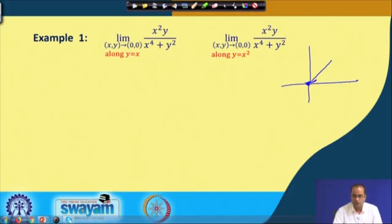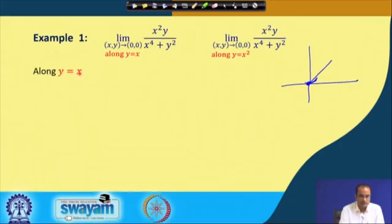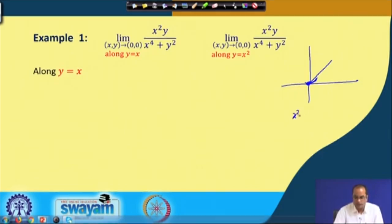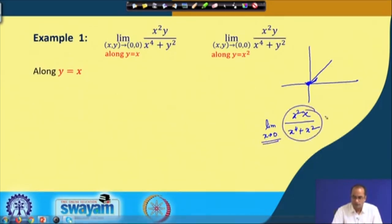We have chosen two different paths to approach the origin: the straight line y = x and the parabola y = x². Along y = x, substituting y = x gives x² · x / (x⁴ + x²) = x³ / (x⁴ + x²). Cancelling x² gives x / (x² + 1), and as x → 0 this limit goes to 0.